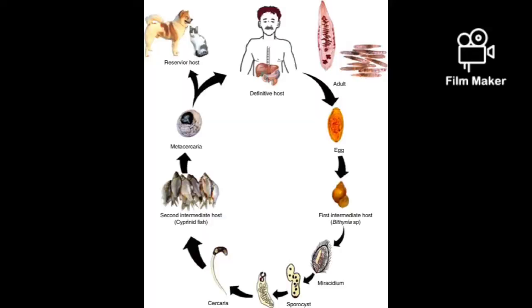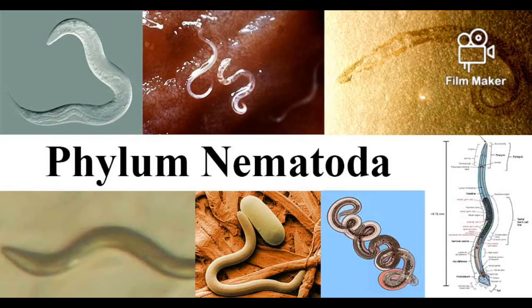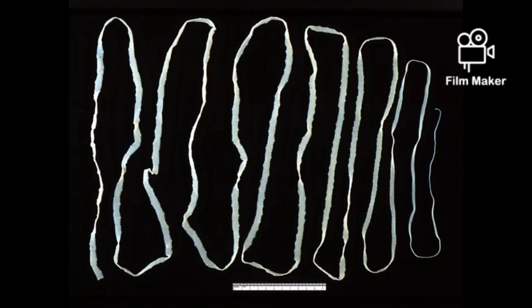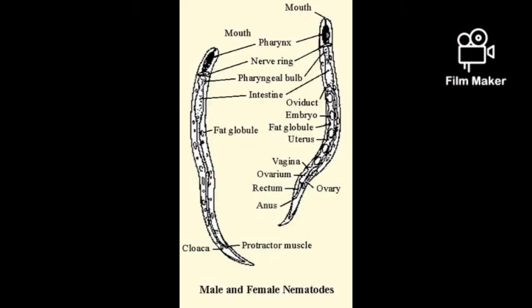The fourth phylum is Phylum Nematoda. 'Nematoda' means tiny, and they are also called roundworms. Nematodes are usually parasites and are triploblastic organisms. They have a coelom, but it is a pseudocoelom — meaning a false coelom. Their bodies are bilaterally symmetrical. They have an organ level of organization and reproduce sexually. They can also cause diseases like elephantiasis. An interesting fact: the nematode called C. elegans has females that are larger than males.